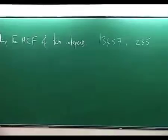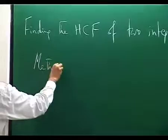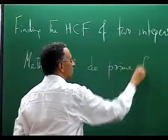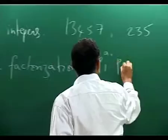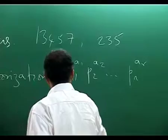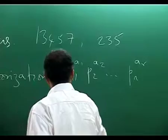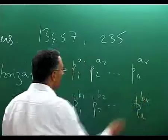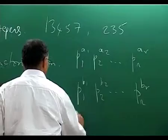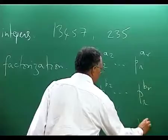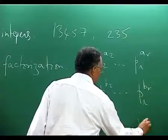Suppose you wanted to prime factorize and do it — so method one: do prime factorization. Then you can write down if one number is P1^A1 · P2^A2 · ... · Pr^Ar, and the other one also as P1^B1 · P2^B2. Maybe some of these primes do not divide the other one — if they do not divide, I take that exponent as 0. So I can assume without loss of generality that the primes are the same, and then the HCF is P1 to the minimum of A1, B1, times ... times Pr to the minimum of Ar, Br.